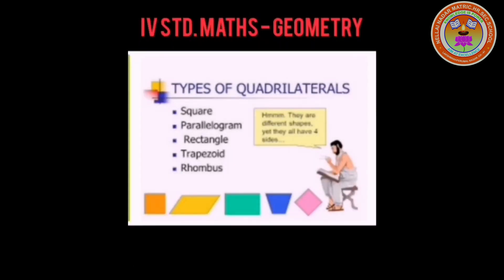Next, types of quadrilaterals. The first one is square, second one is parallelogram, third one is rectangle, fourth one is trapezoid, and fifth one is rhombus. They are different shapes, yet they all have four sides.